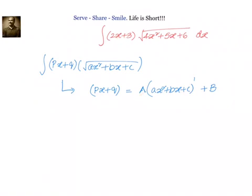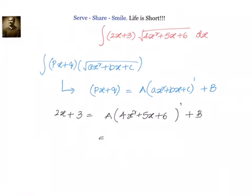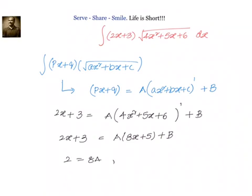For that, we will write down 2x + 3 = a into derivative of (4x² + 5x + 6) plus b. We know the derivative of (4x² + 5x + 6) is 8x + 5, so a(8x + 5) + b = 2x + 3. Now let us compare the coefficients of x: we get 2 = 8a, and comparing constant terms we get 3 = 5a + b.